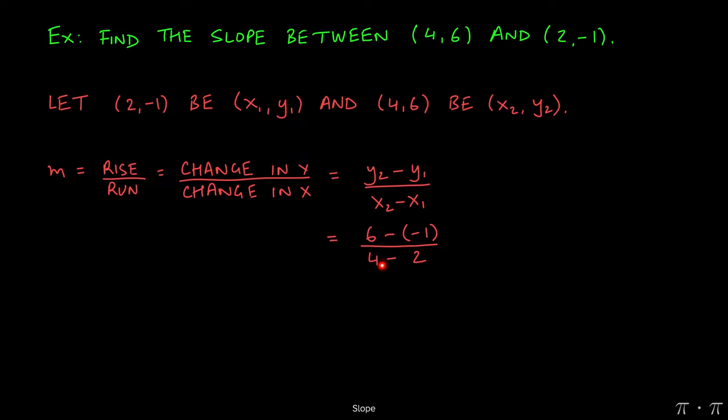x2 minus x1 is simply 4 minus 2. Now, if we distribute the negatives, negative times a negative would yield a positive, and we would get 6 plus 1, which is stated here. 4 minus 2 would just give us 2. 6 plus 1 is just 7.